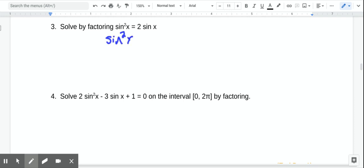So we're going to get everything on the same side so we can factor this. And the reason we need to factor this is because we have a sine x and a sine squared x. So we needed a little different technique. I'm going to factor out a sine, which is going to give me sine x minus 2.